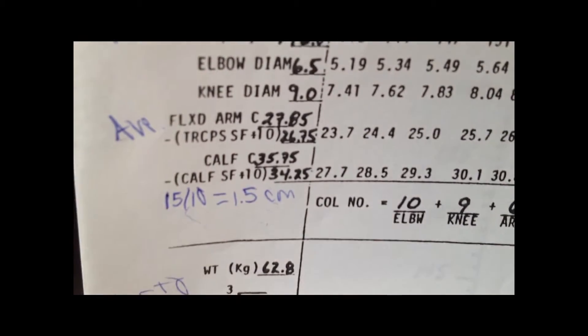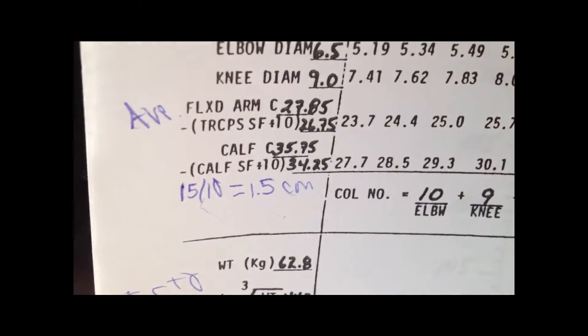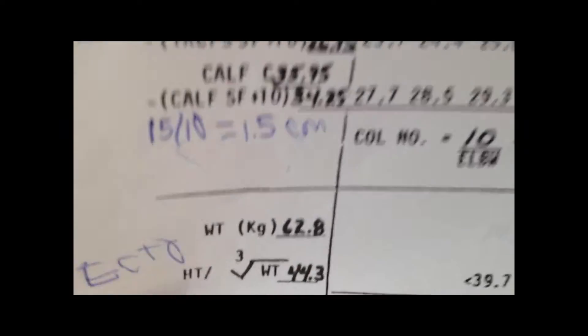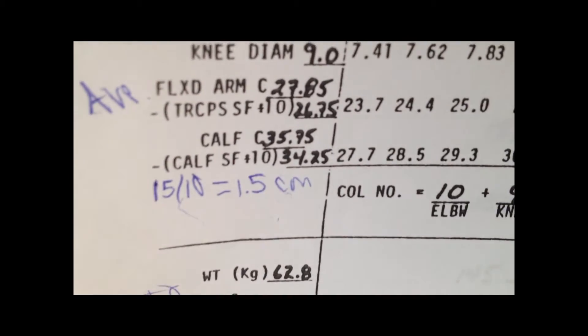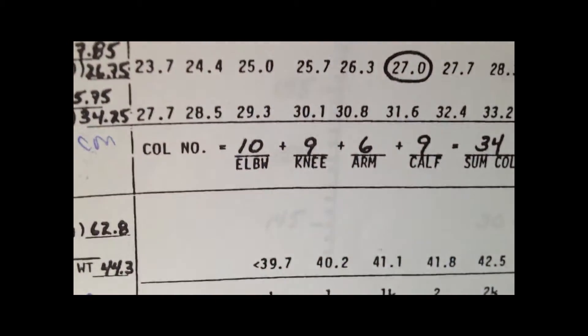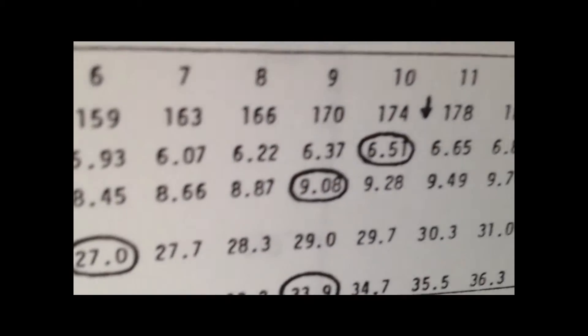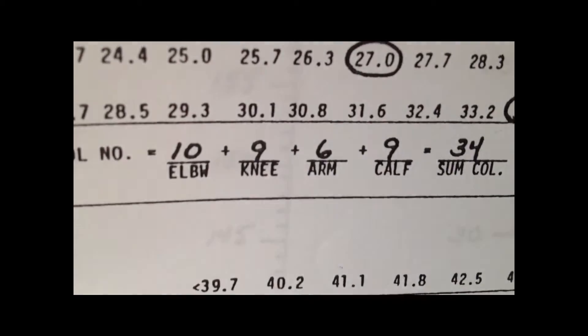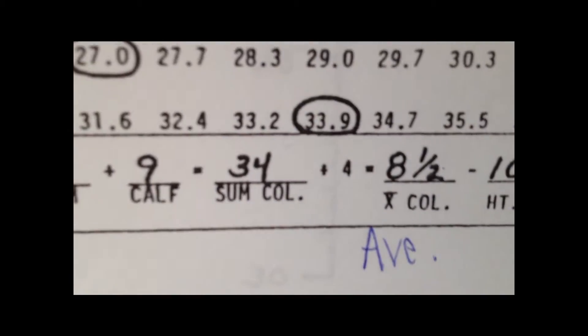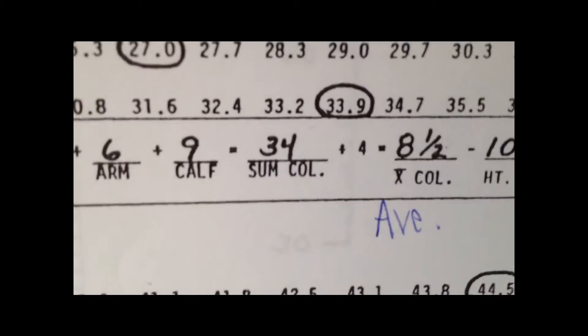The flexed arm circumference and calf circumference are the starting numbers, and you subtract the triceps and calf skin fold each divided by 10. So the calf skin fold divided by 10: 15 divided by 10 is 1.5, meaning 35.75 minus 1.5 is 34.25. This goes across to 33.9 because that's the closest to 34.25. For the column equation at the bottom, the elbow diameter falls under the 10 category, so it's 10. The knee at 9.08 falls under the 9 category. You add these up to get a sum, then divide by 4 — it looks like an addition sign but it's divide — and that gives you 8.5.